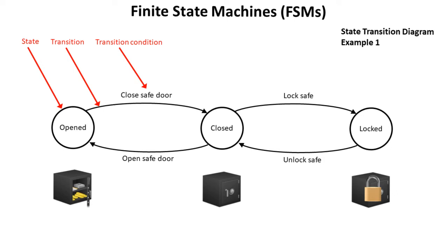Very simply put, here's a finite state diagram for a safe. It can be in one of three states at any given time. It can be open, it can be closed and it can be locked. Here we see the transitions moving from one state to another and we see the condition that triggers us moving from one state to another.